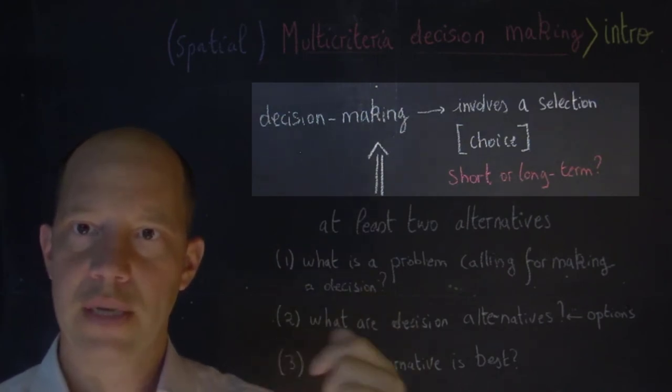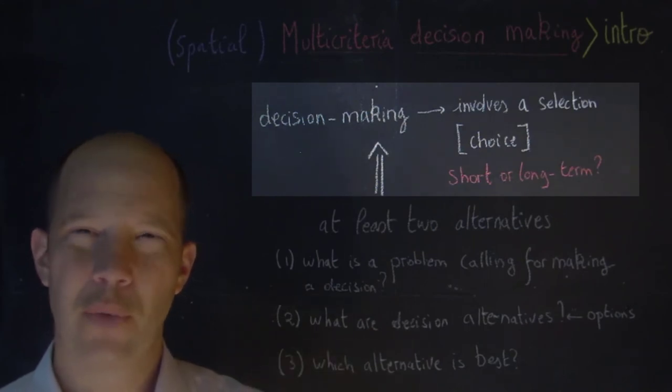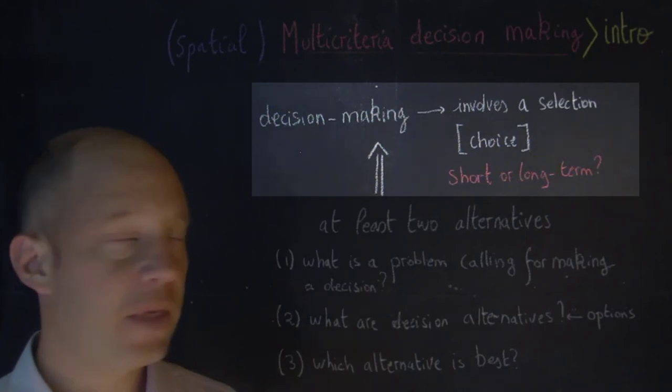Those decisions are typically made thinking in the short term or in the long term. For instance, when you decide what to wear, what to eat tonight, which store to go to shop, those are decisions that don't require a lot of thinking.